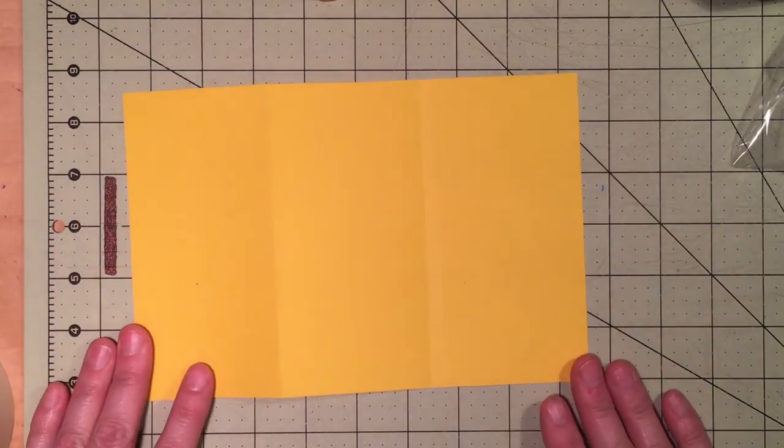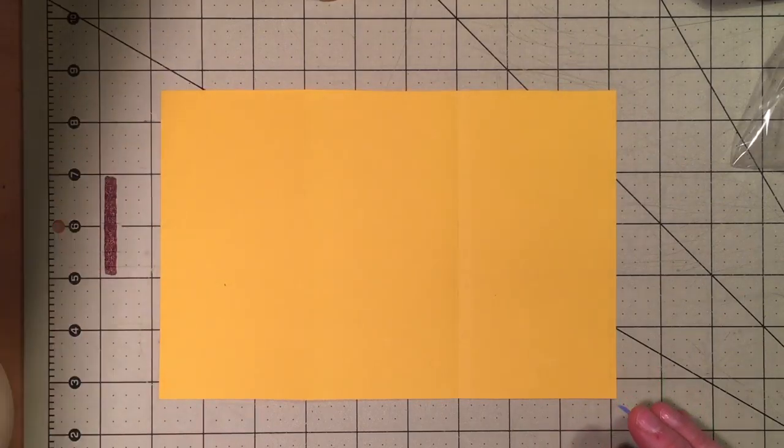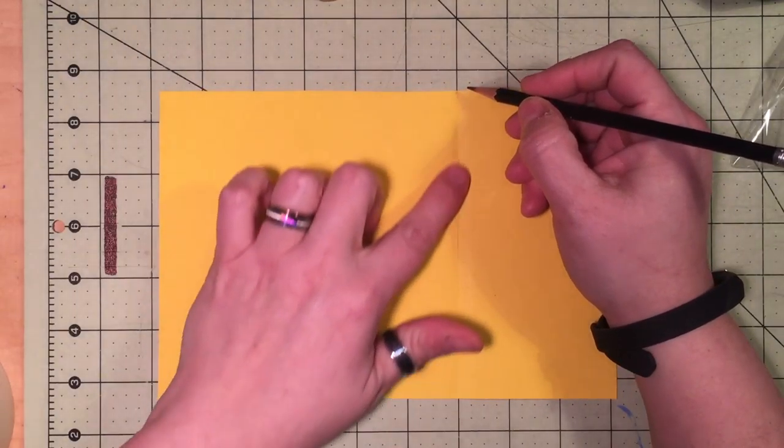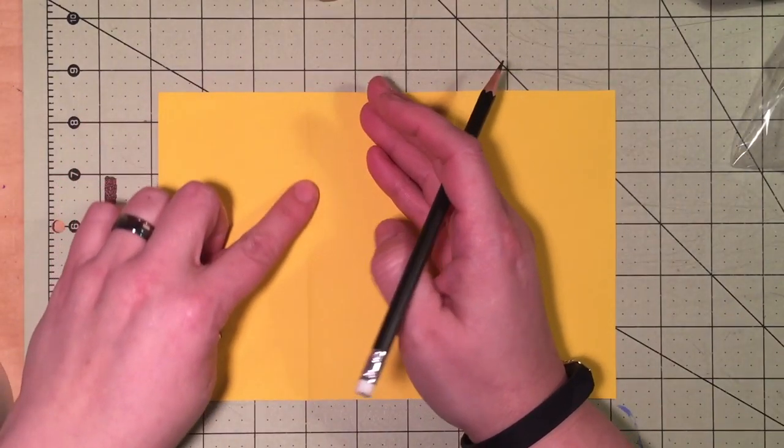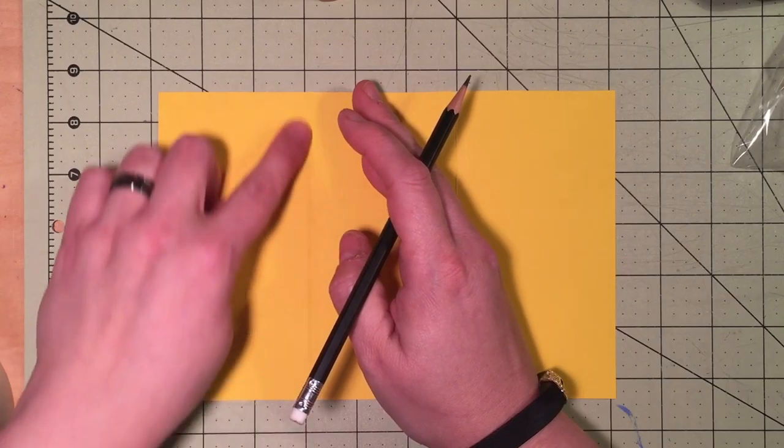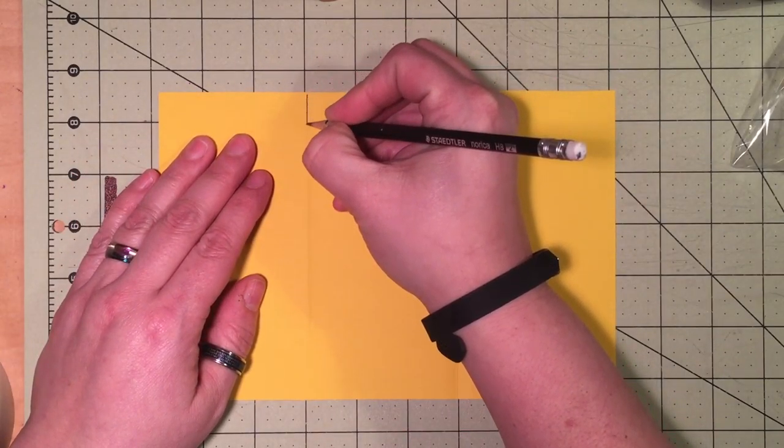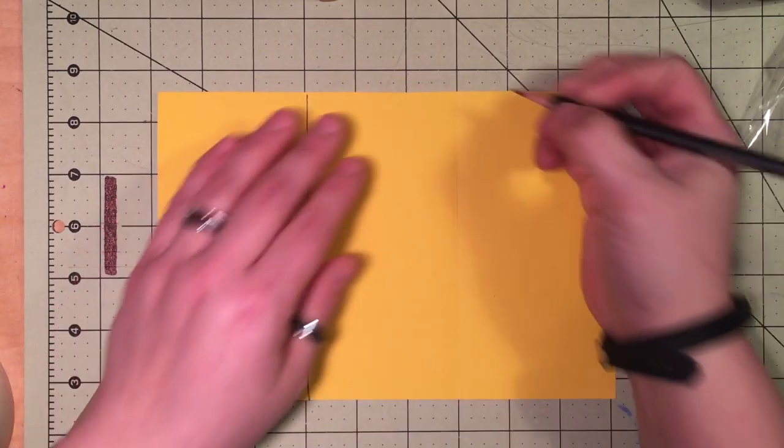All right, so the next step is going to be with a pencil. You're going to draw along the invisible line here and then there is another one right here. So we're going to follow those lines, one and two.